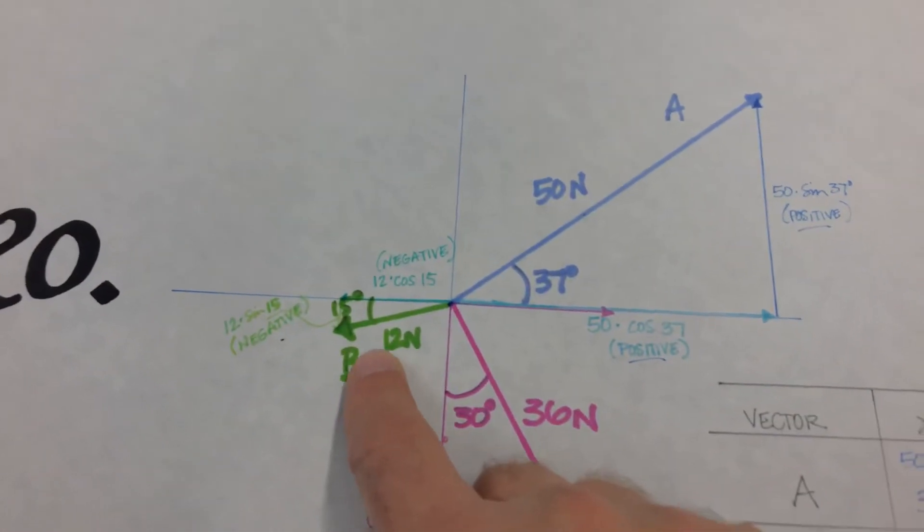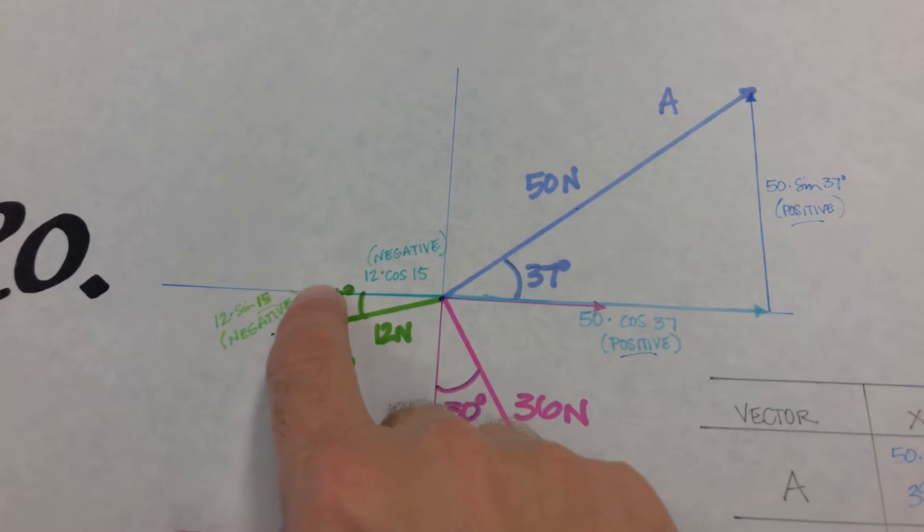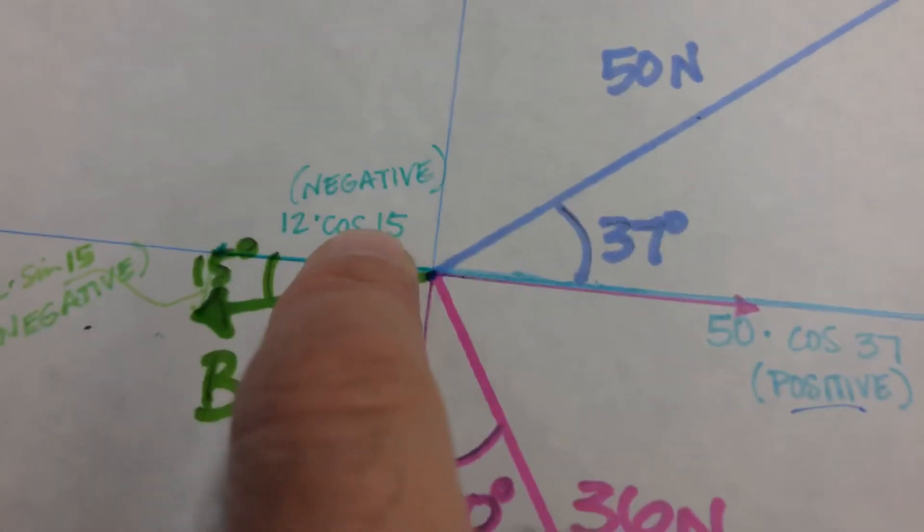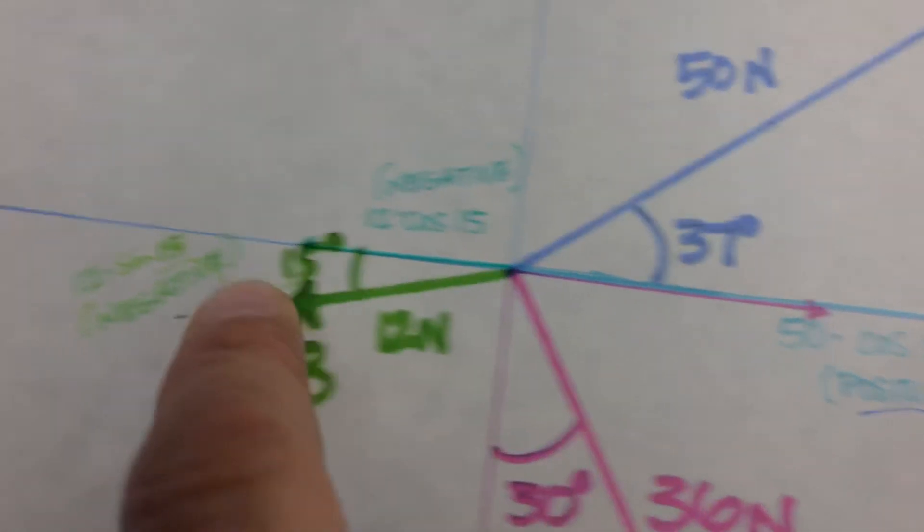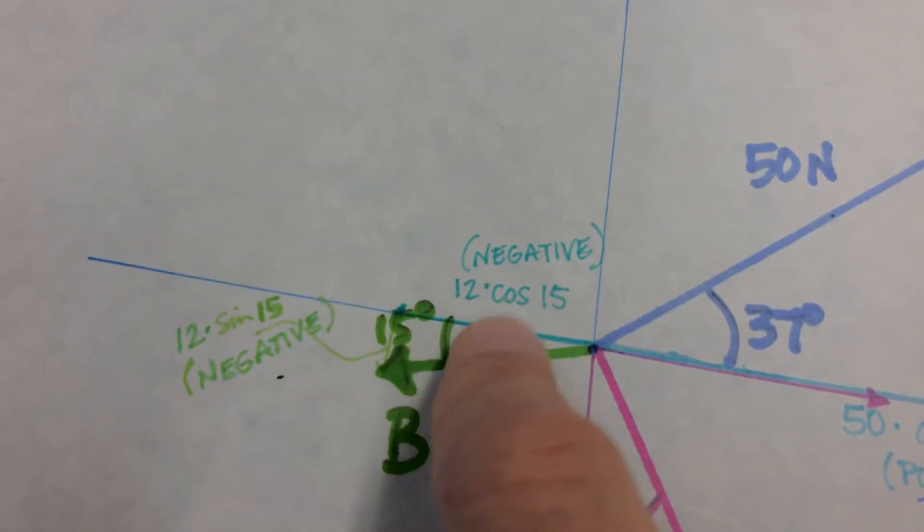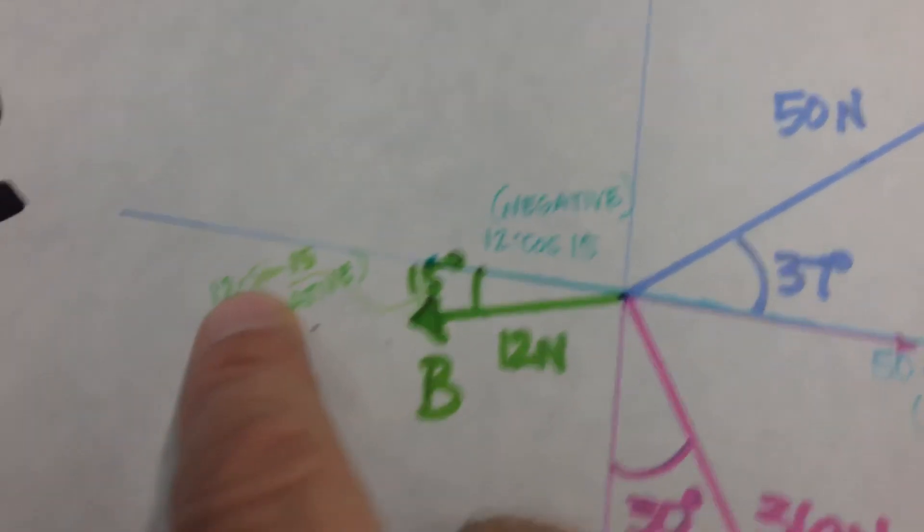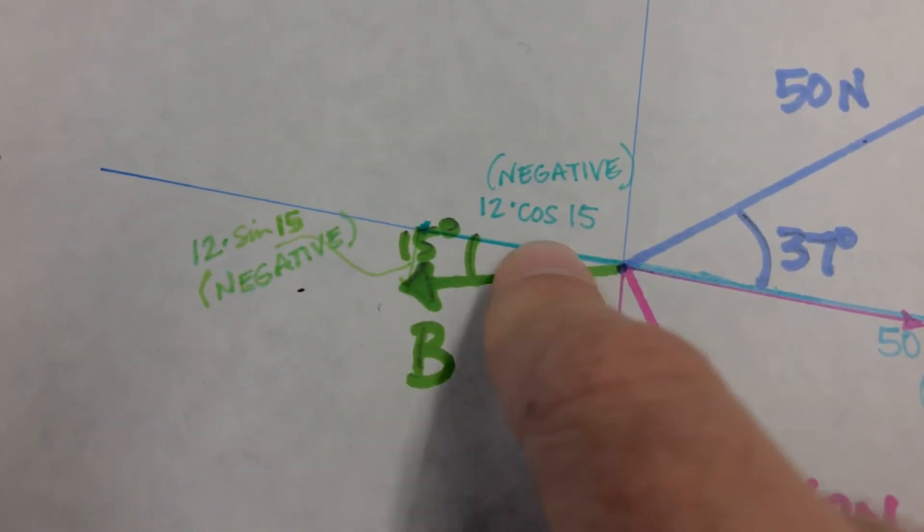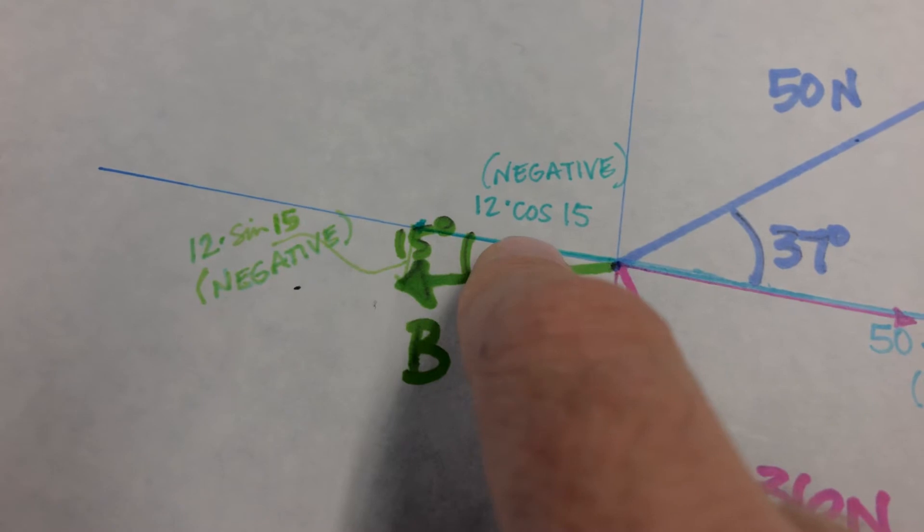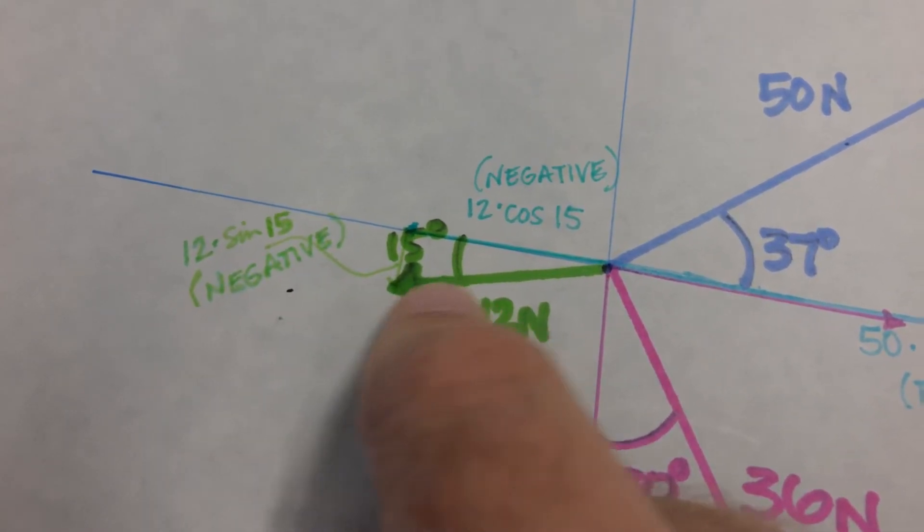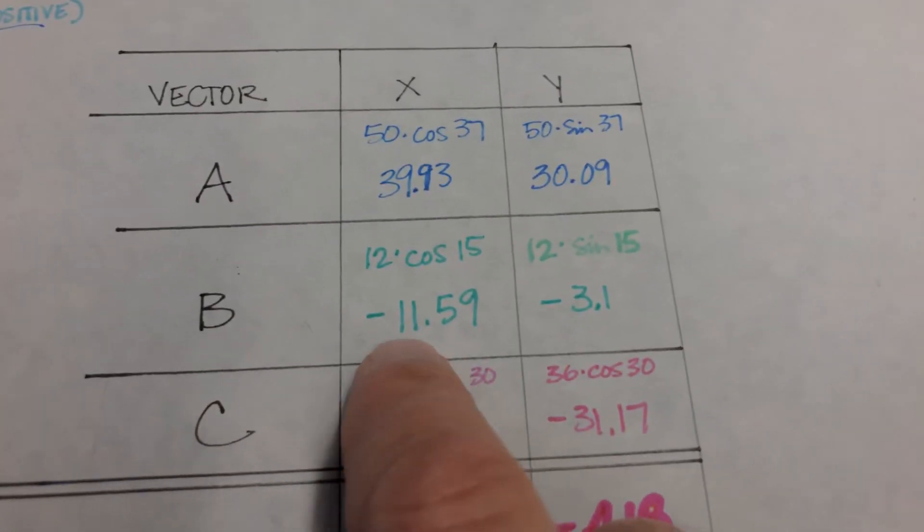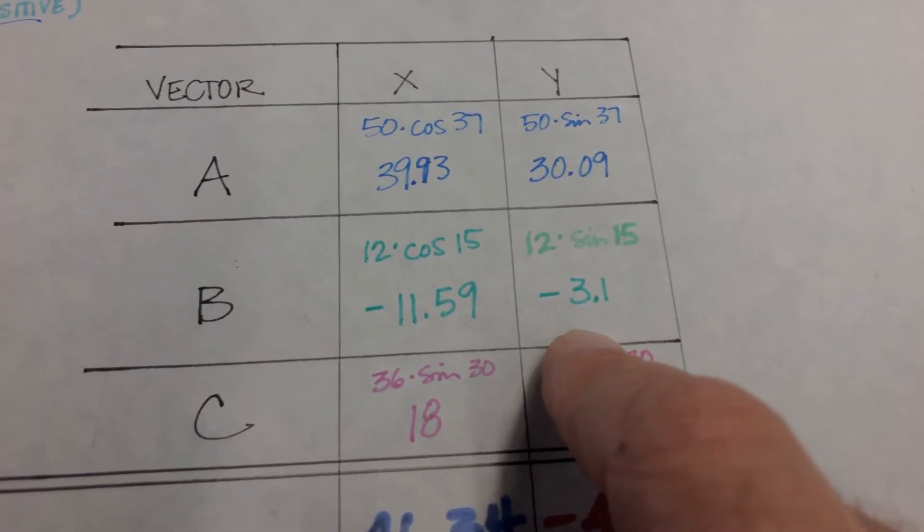And so for B, both of these are X is in the negative and Y is in the negative. So for this, X is a negative value, Y is a negative value, 12 times cosine 15 here, and 12 times sine 15 here. So 12 is the hypotenuse, cosine for the adjacent side, sine for the opposite side. Both X and Y are in the negative because it's in the third quadrant. So B, we have negative values for X and Y.